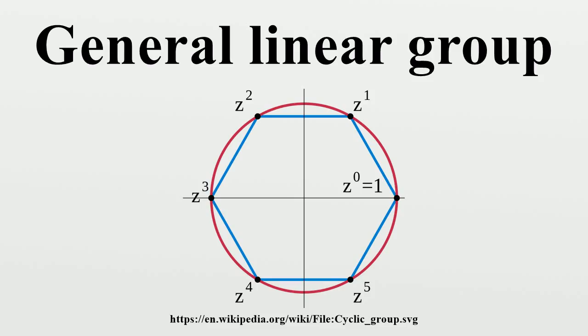A scalar matrix is a diagonal matrix which is a constant times the identity matrix. The set of all non-zero scalar matrices forms a subgroup of GL(n,F) isomorphic to F*. This group is the center of GL(n,F). In particular, it is a normal abelian subgroup.